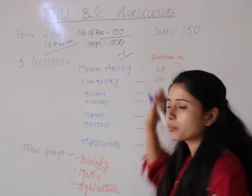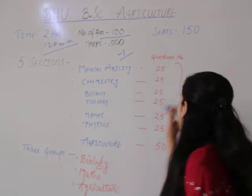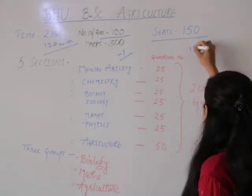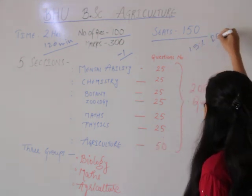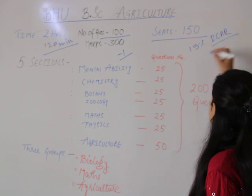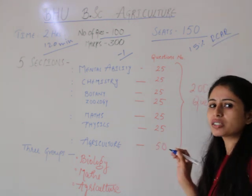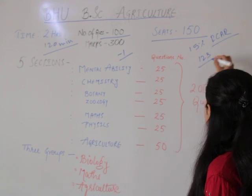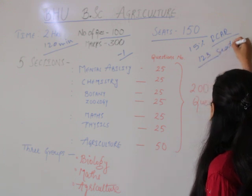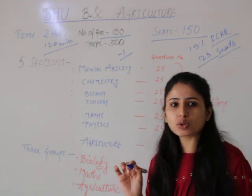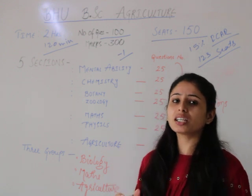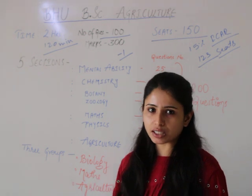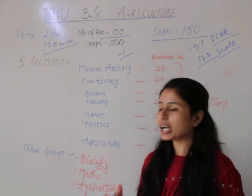The number of seats is 150 seats. In this way, 15% of seats are in reserved category. This means that in BHU entrance, you will be able to compete for limited seats. Seats are very low, and the number of students is very high, so the competition is very high.